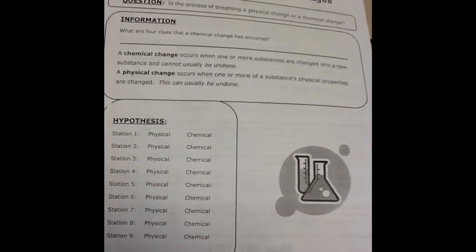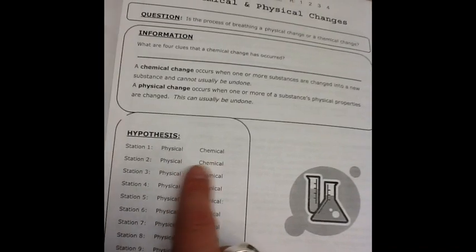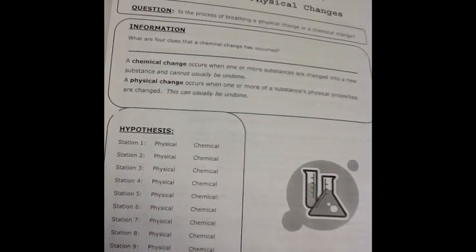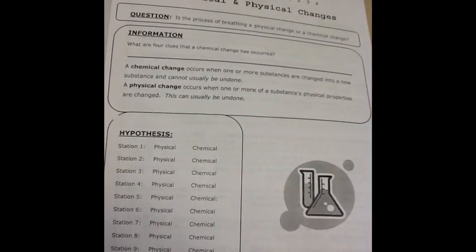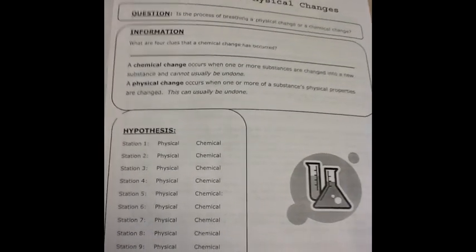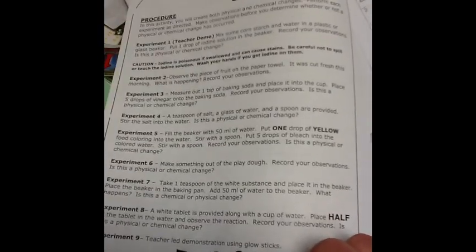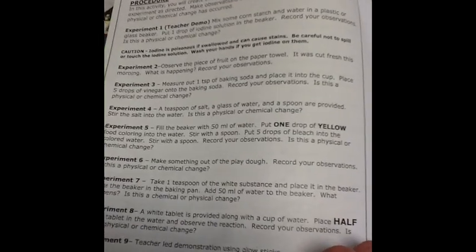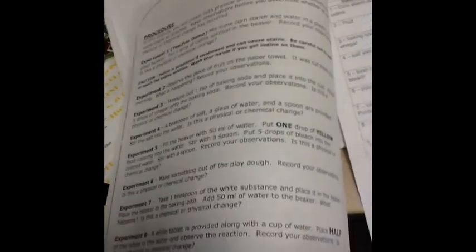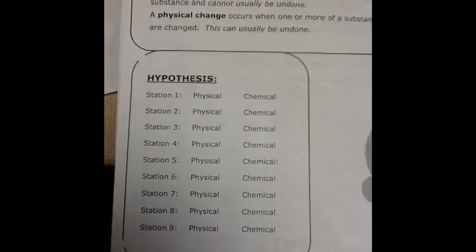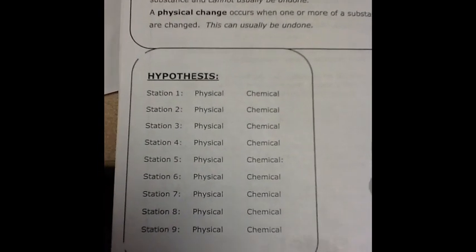Then try to make a guess on these hypothesis areas here. We are not going to have number one and number seven in this video, but all the others should be there. You need to read the experiment, not do it or watch it, but just read it, and then make a guess of what you think is going to happen. Do you think it's going to be a physical or a chemical change? Circle it.